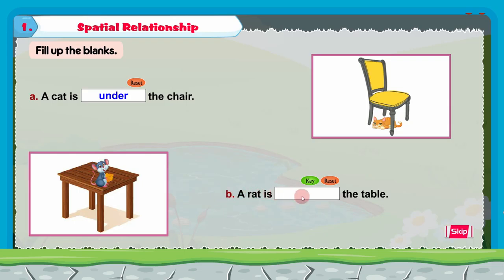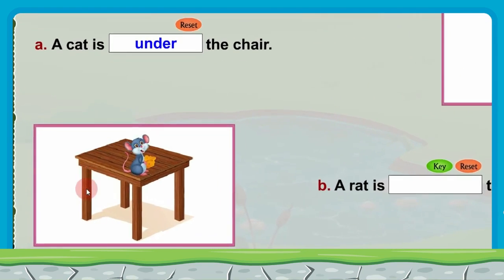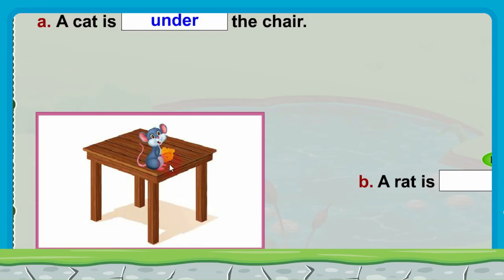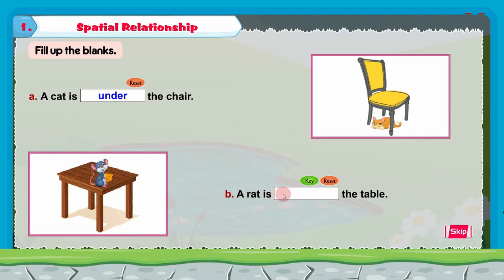B: a rat is dash the table. In this picture you can see a table and a rat. Where is the rat? The rat is on the table. A rat is on the table. You can see this is the table and the rat is on the table.